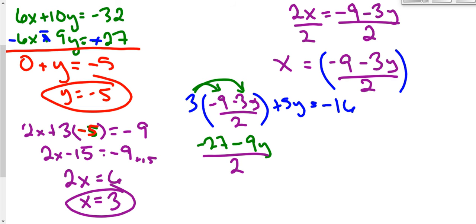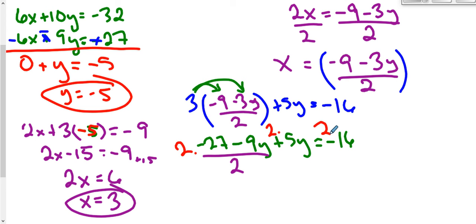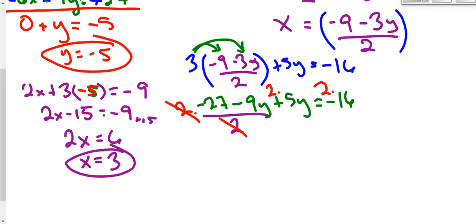I don't want to divide by 2 and deal with fractions, so instead I'll multiply every single term in this equation by 2. The times 2 out front and the divided by 2 in the denominator will cancel each other out — so I'll just have negative 27 minus 9y without having to divide anything. Everything else I do have to multiply by 2: 5y times 2 is 10y, and negative 16 times 2 is negative 32.